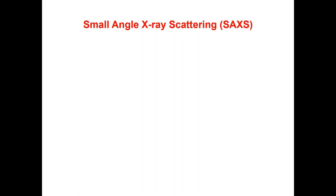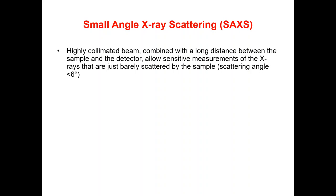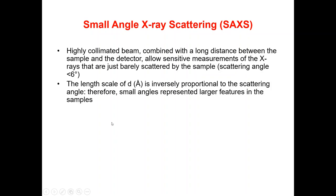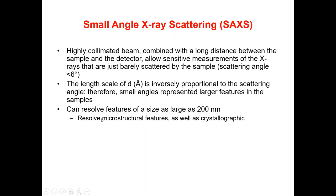Small angle X-ray scattering, called SAXS, uses a highly collimated beam combined with a long distance between the sample and the detector, which allows sensitive measurement of X-rays that are just barely scattered by the sample. In this technique, the scattering angle is smaller than six degrees. The length scale of the d-spacing measured is inversely proportional to the scattering angle, so small angles represent larger features in the sample. This technique can resolve features of sizes as large as 200 nanometers, meaning it can resolve microstructural features as well as crystallographic information.